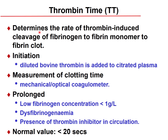The thrombin time determines the rate of thrombin-induced cleavage of fibrinogen to fibrin monomer. Diluted bovine thrombin is added to citrated plasma with calcium, and fibrin polymer formation is measured by a mechanical-optical coagulometer. A prolonged thrombin time is associated with decreased fibrinogen concentration, abnormal fibrinogen (dysfibrinogenemia), or the presence of a thrombin inhibitor. Normal thrombin time is less than 20 seconds.